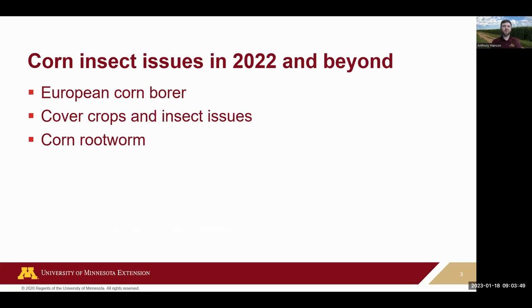To start off, the corn insects we're going to cover today: we're going to start with European corn borer and some of the Minnesota Corn Growers-funded research going on, including surveys. Cover crops come up a little bit and some insect issues — whether in corn or sometimes soybean — and we'll touch on that. At the very end we're going to cover corn rootworm issues, much of which is Bruce's ongoing research in southwestern Minnesota.